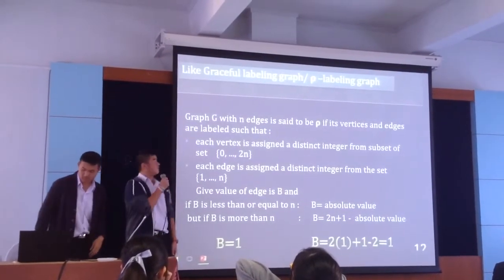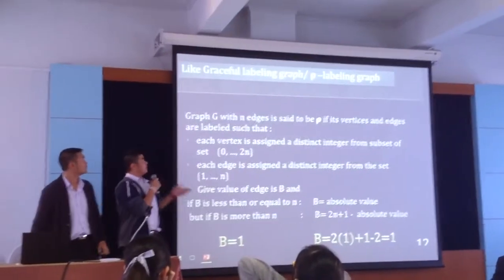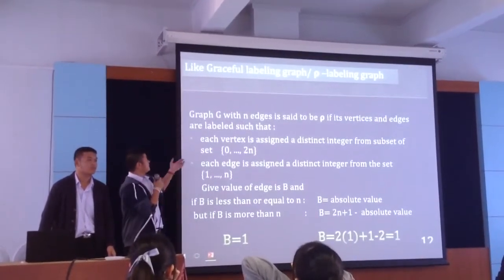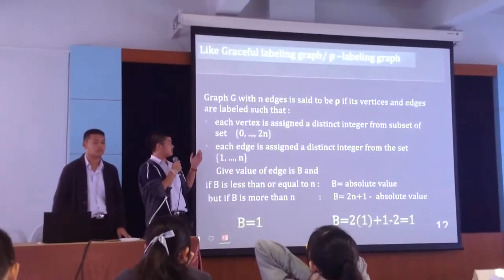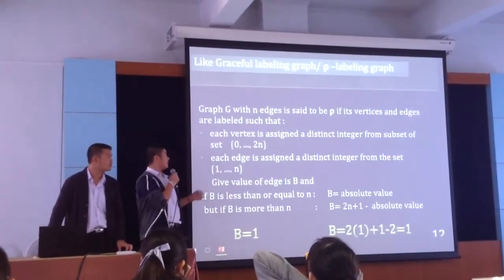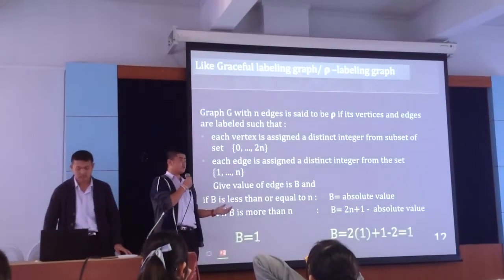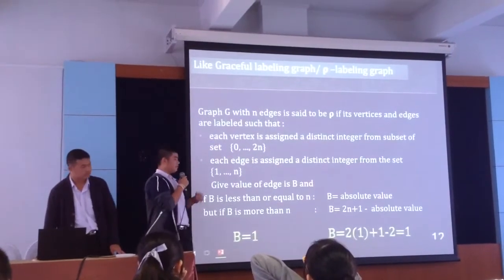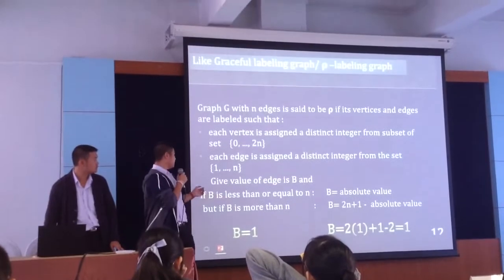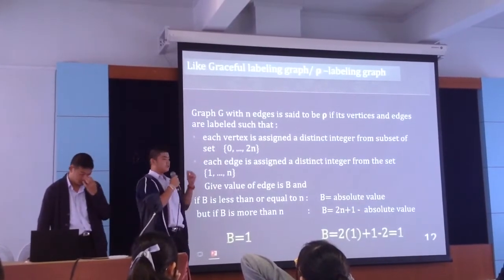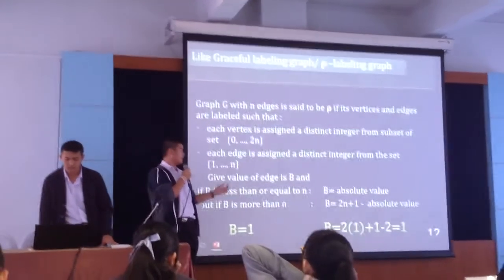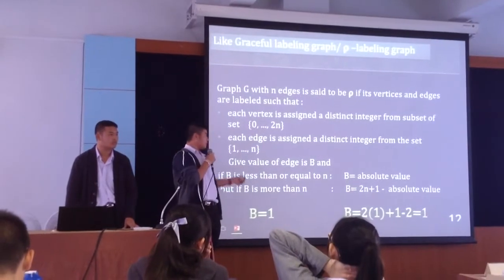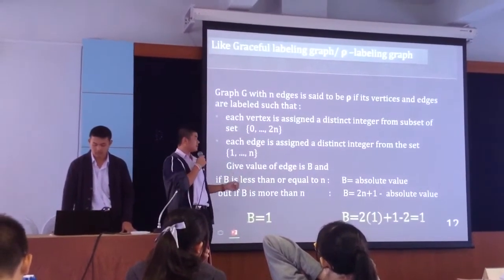For the line graceful labeling graph, if we let G be a graph with vertices and edges, the graph will be a low labeling graph if its vertices and edges are labeled such that vertices are assigned by distinct integers from a subset of 0 to 2n, and h assigns distinct integers from the set 1 to n. But it's different from the full labeling because if b is less than or equal to n, b equals the absolute value; but if b is more than n, b equals 2n plus 1 minus the absolute value.